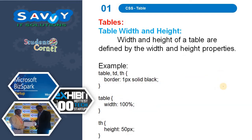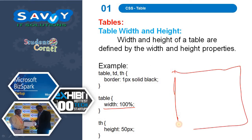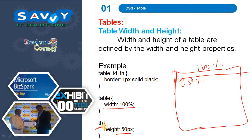Next, table width and height. We can change the width and height of a table. The width and height of a table are defined by the width and height properties. A table width of 100% means it takes up the entire page width. A height of 50 means this height applies to each th element.